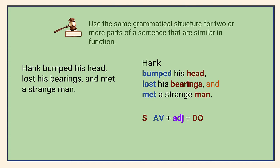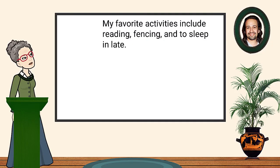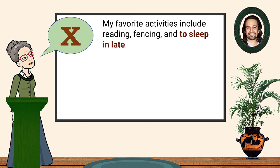Man has an extra adjective — the article 'a' — but it's necessary for the noun 'man' and doesn't count, so to speak, in the structure. In this sentence, there are three direct objects: reading, fencing, and to sleep in late. 'To sleep' doesn't match the -ing forms of the other two objects, so the sentence is an example of faulty parallelism.